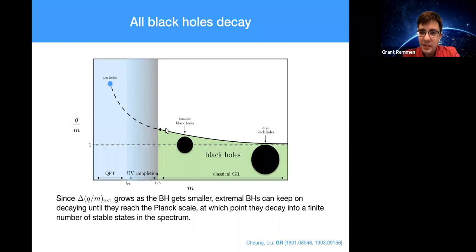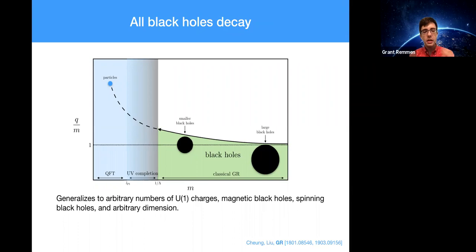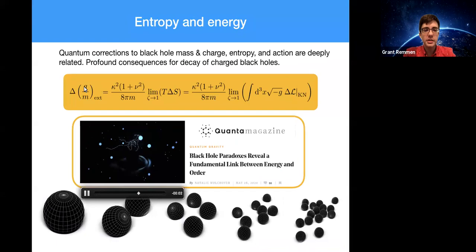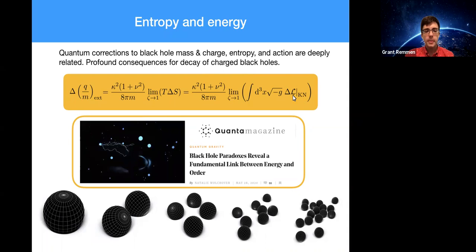We can prove something stronger: this generalizes to arbitrary numbers of U(1) charges, arbitrary copies of electromagnetism, magnetic black holes, spinning ones, and indeed arbitrary spacetime dimensions. There's a profound relationship between the shift in charge-to-mass ratio, the shift in entropy, and the value of the Lorentzian action of the higher-derivative terms evaluated on the black hole solution — for example, on the Kerr-Newman solution. This exciting relationship between mass and charge, entropy as a measure of disorder, and the action as a measure of energy of the system was featured in Quanta Magazine. It tells us this matching of coefficients was no happenstance — it had to happen and works for a much larger class of black holes.